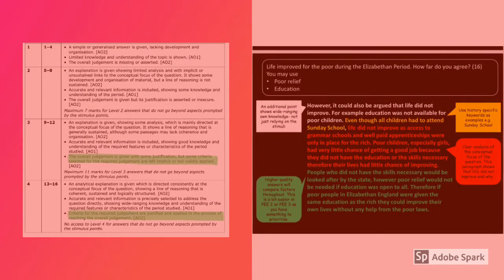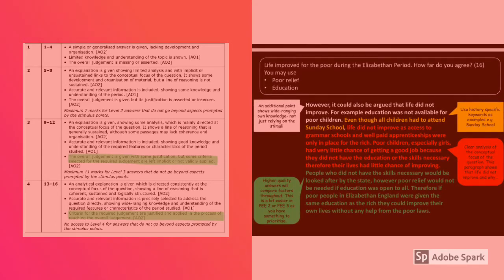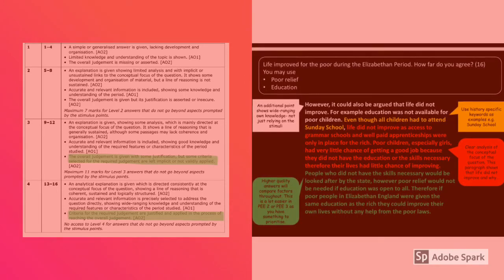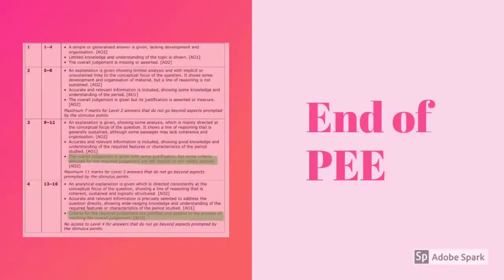'However, it could also be argued that life did not improve. For example, education was not available for poor children. Even though all children had to attend Sunday school, life did not improve as access to grammar schools and well-paid apprenticeships were only in place for the rich. Poor children, especially girls, had very little chance of getting a good job because they did not have the education or the skills necessary. Therefore, their lives had very little chance of improving.'